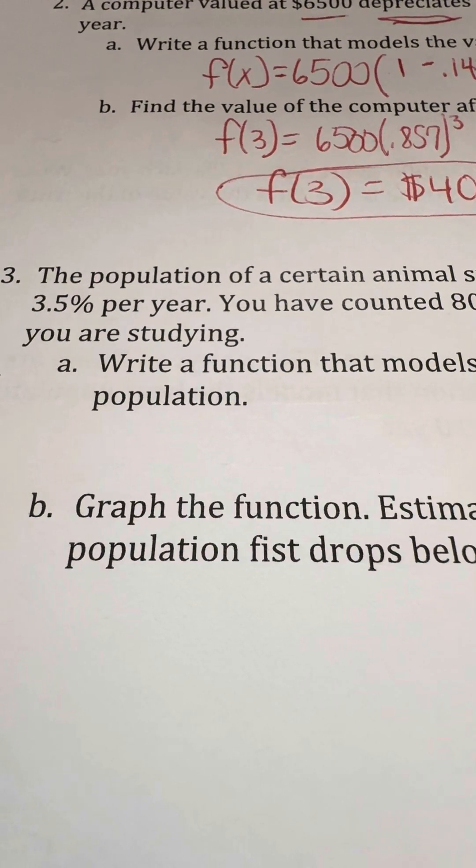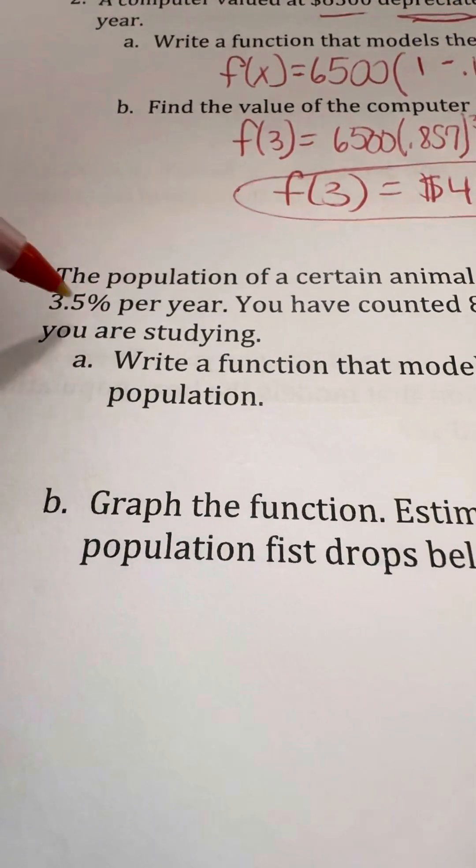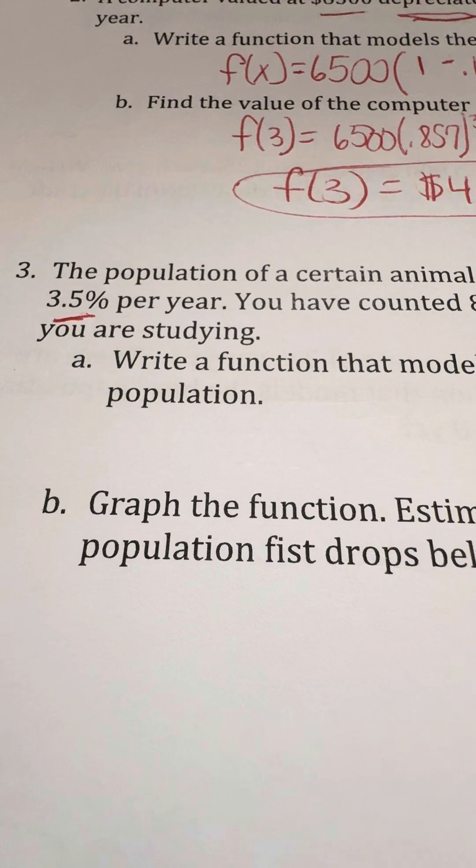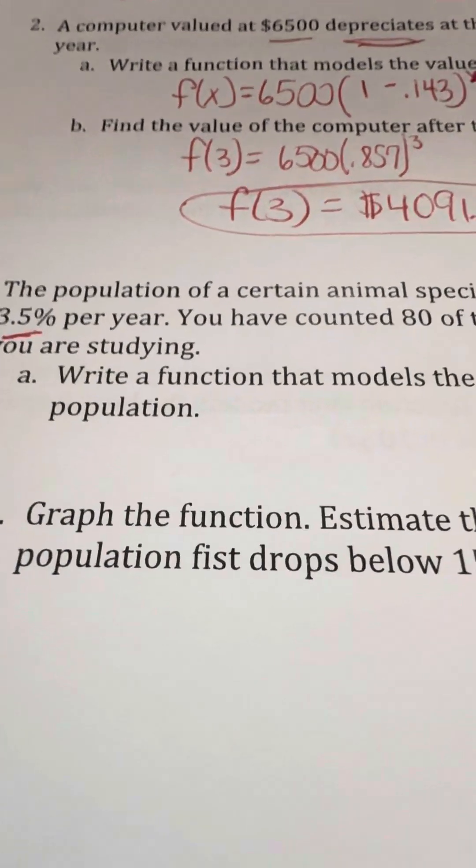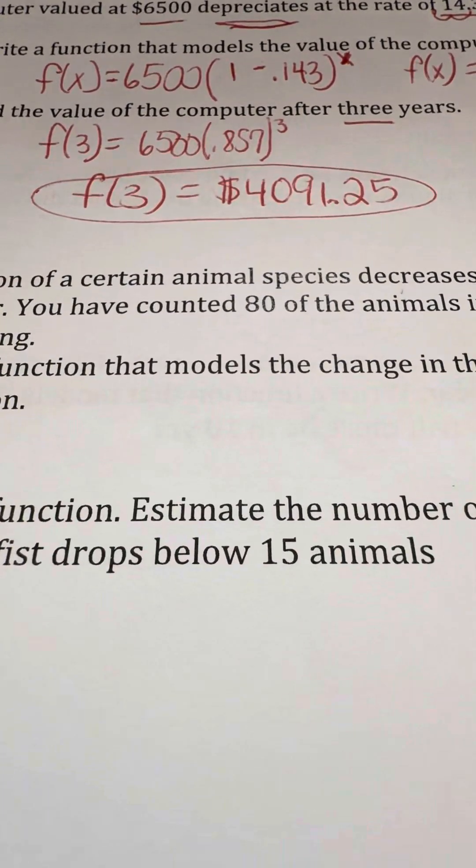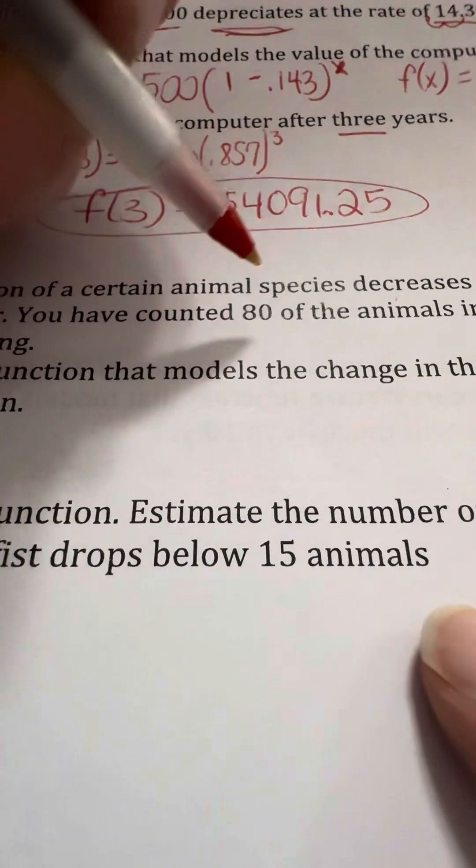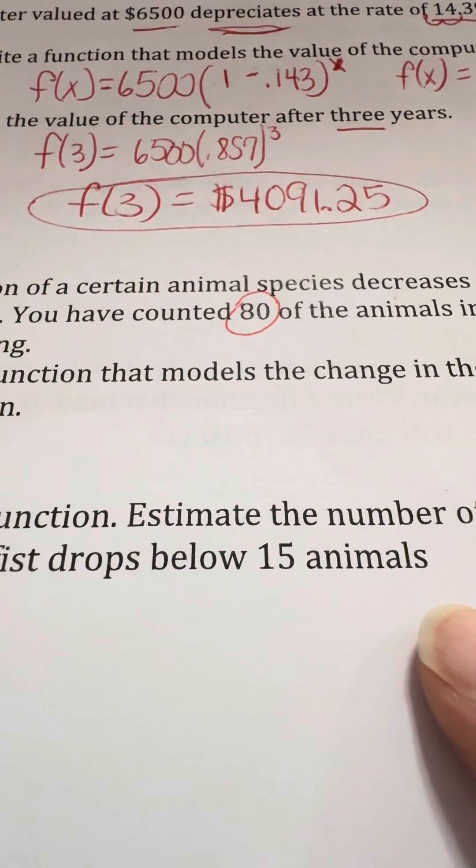So we're going to look at the fact that we have a 3.5% decrease. So this is going to be decay. So this means that when we're taking our value, we're going to find a decay factor that is going to be less than 1 because 1 means 100%. And we're going to be dropping it. And we're starting off with 80 animals. So that is our beginning value.